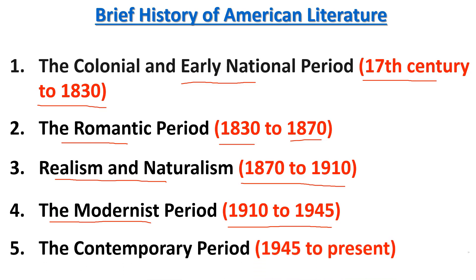The last period is the Contemporary Period, with a time duration from 1945 to the present. The important literary figures of this period include Toni Morrison, Alice Walker, Vladimir Nabokov, and Sylvia Plath. These are a few of the important writers and literary figures we discussed in this video.